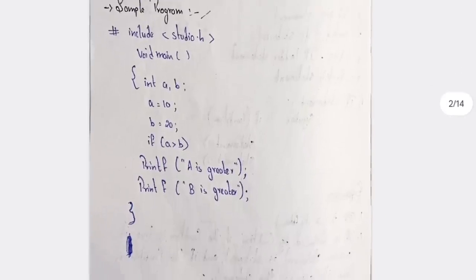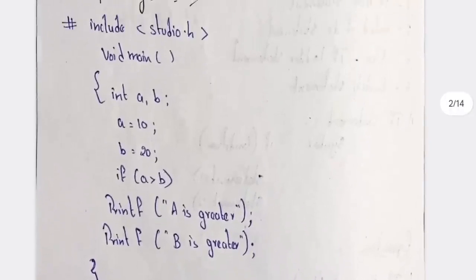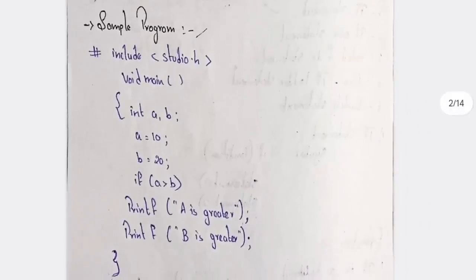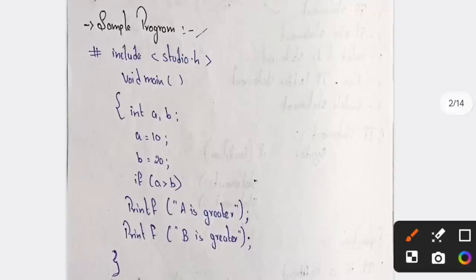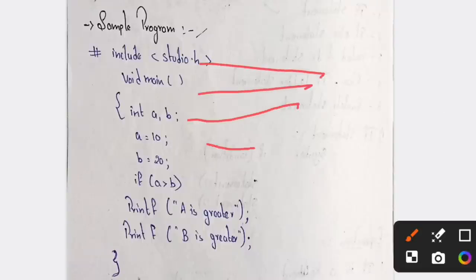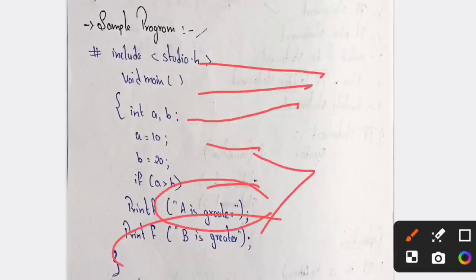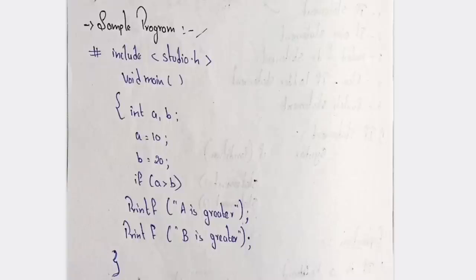The sample program is important. What you will have here: includes stdio, void main, integer a and b, if a is greater than b — printf 'a is greater', else printf 'b is greater'. So here we are having a condition. Just write the syntax and the sample program.